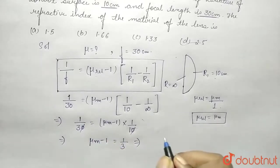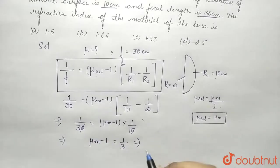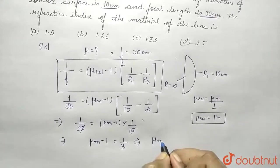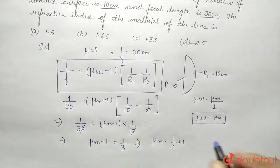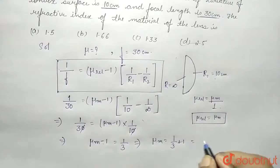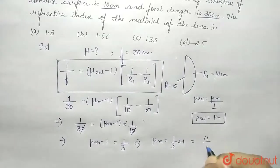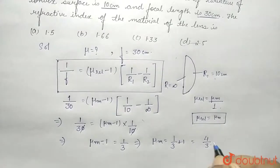So μ_m - 1 plus 1 - this 1 will come on the other side. So we'll get 4/3.